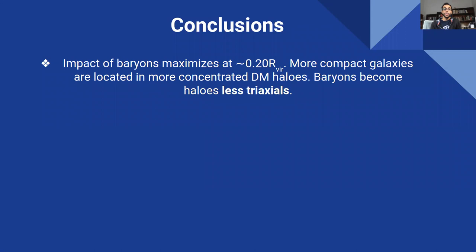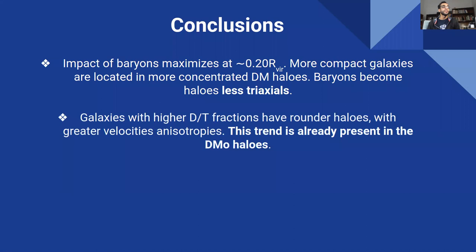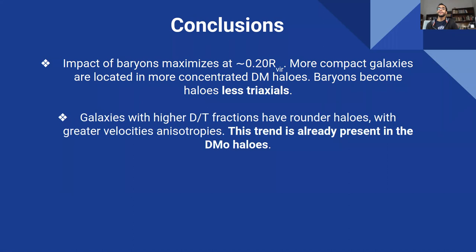Halos hosting baryons become less triaxial in agreement with previous studies. Halos hosting galaxies with higher disk to total fraction are rounder and less triaxial with greater velocity anisotropy. However, this trend is already present in the dark matter only halos. This indicates a remarkable result because it could potentially provide a statistical predictor of the morphology that the galaxy would have if it were to form in a halo of a given shape.